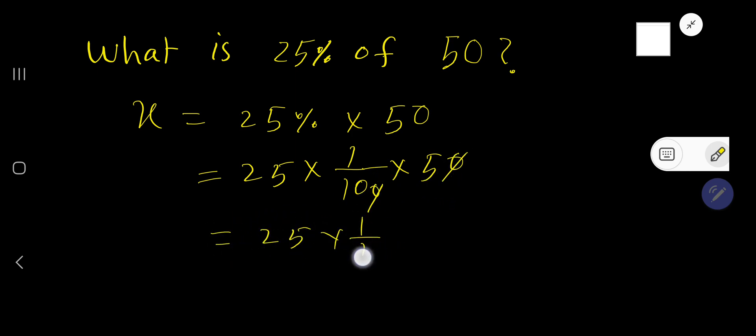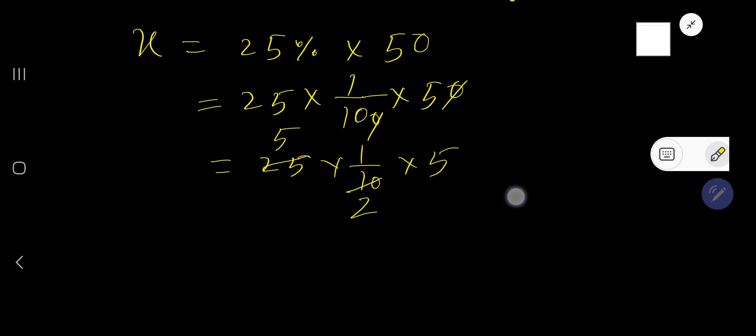getting 25 times 1 over 10 times 5. Look, this 25 is divisible by 5, this 10 is also divisible by 5. So if you divide this 10 by 5 you will get 2, if you divide this 25 by 5 you will get 5. So we are getting 5 times 5 divided by 2, that is 25 by 2.